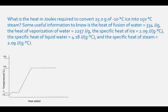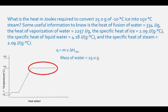The fourth part of the heating curve is the energy it takes to break the hydrogen bonds from a liquid to a gas. This equation is Q equals mass times the heat of vaporization. The mass of the water is 25.0 grams and the heat of vaporization of water is 2,257 joules per gram. The heat energy of this transition is calculated as 25.0 grams times 2,257 joules per gram, which equals 56,425 joules.